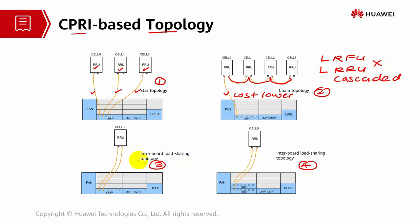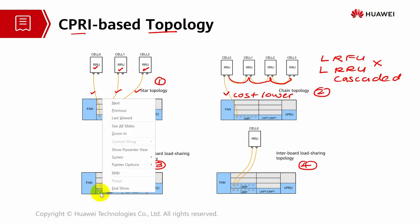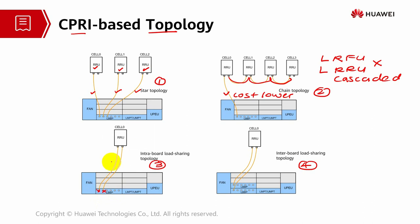Intra-board load sharing uses one LBP board with two CPRI connections towards one RRU. If one link is down, the other link remains workable and data is transmitted through the active link. Inter-board load sharing uses two LBP boards, with two links connected to different LBP boards. If one LBP board goes down in intra-board mode, all traffic is impacted. But with two LBP boards in inter-board mode, if one board fails, data is still transmitted through the second LBP board, providing backup.